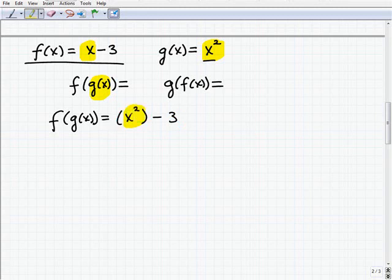That's the g function, and I plugged it in for that x. So now we just go ahead and simplify. So like I said, some of these are very easy. So f of g of x is simply x squared minus 3.